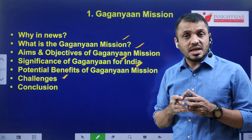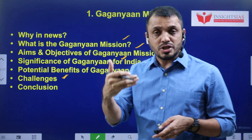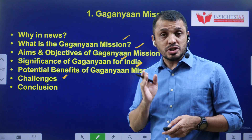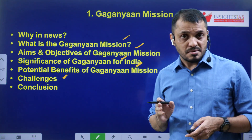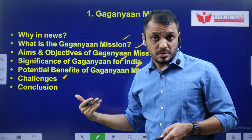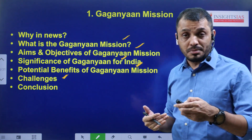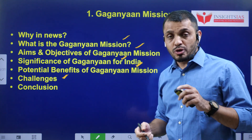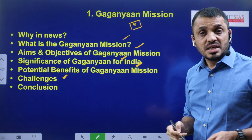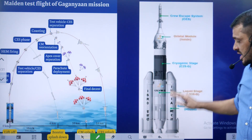Gaganyaan is about the Indian space agency ISRO launching humans into space. It is a space flight. How many days? It is going to be for 3 days. How many astronauts are we sending? We are trying to send 3 people. How far will they go? They will go up to 400 kilometers above the Earth's surface. Now one question to you students: which country is training our astronauts? Put your answer in the comment section.